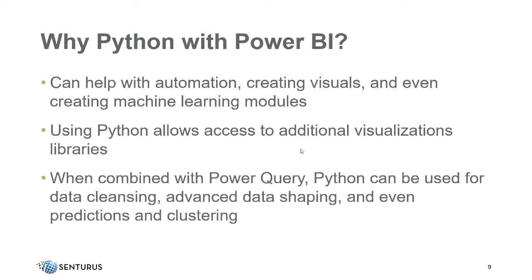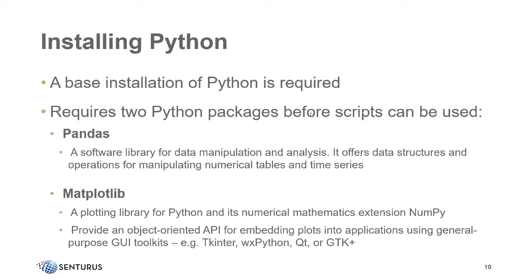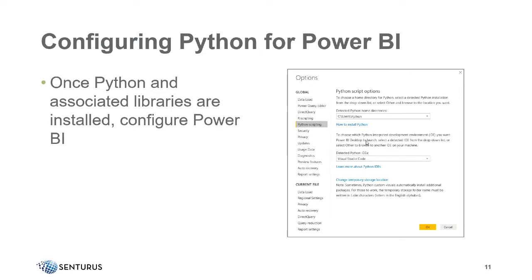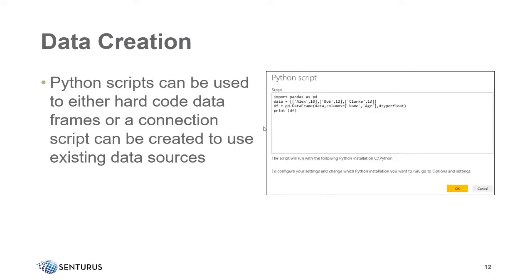Some basic requirements: you do have to have a base installation of Python installed. Most importantly, there are two primary packages used — pandas, which is for data manipulation and analysis, and matplotlib, which is the plotting library where we'll do visualizations. Matplotlib is an object-oriented API that lets us work with toolkits like Tkinter, wxPython, GTK+, and others. Once Python is installed, we have to configure Power BI, which I'll show you in a moment. We can also use Python to create data, either hard-coded or by connecting to a database.